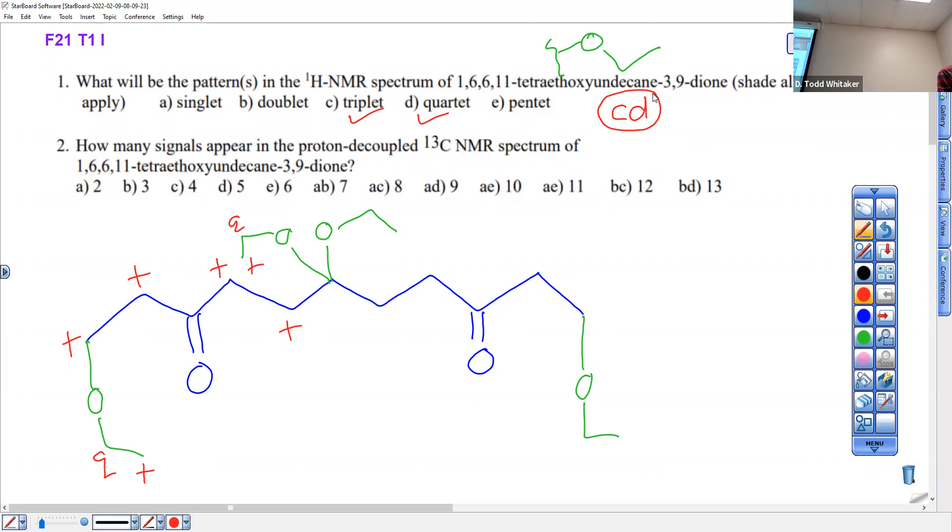How many signals appear in the proton-decoupled C13 NMR spectrum? That's just a fancy way of asking how many types of carbon are in this molecule. These two carbons here and here are identical. There's no differentiating them. So I'm just going to count everything to the left of my thing here.